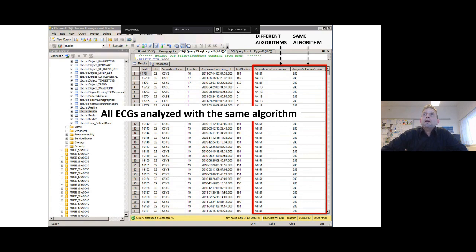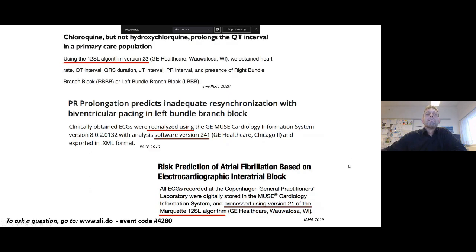So why do we do this? Why do we do this when we perform research? Well, we do this because when we publish our results, it's very important for us to write in our methods section that all ECGs are analyzed with the same version. And why is this important? Well, this is important because, of course, we want to report findings that are caused by disease and not findings that are caused potentially by differences in different algorithms.